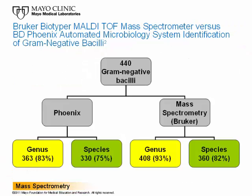We studied 440 gram-negative bacilli. 89% of the 440 isolates generated a high confidence score of greater than or equal to 2 with direct colony testing. The 11% that did not generate a score of 2 or greater were extracted. Using the BD-Phoenix system, 83% were identified to the genus level and 75% to the species level. Using mass spectrometry, 93% were identified to the genus level and 82% to the species level. Statistically, mass spectrometry outperformed the BD-Phoenix for identification of gram-negative bacilli.